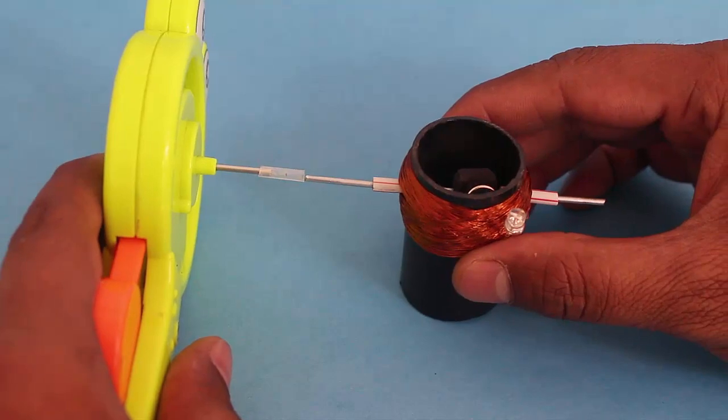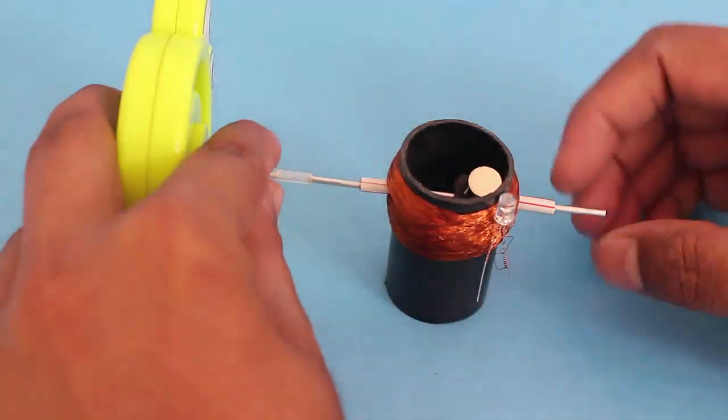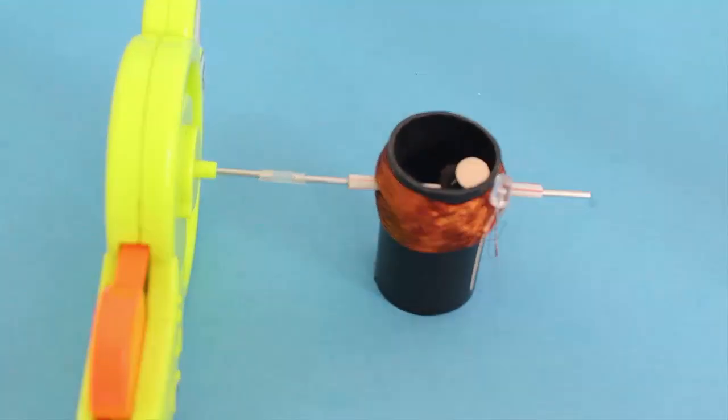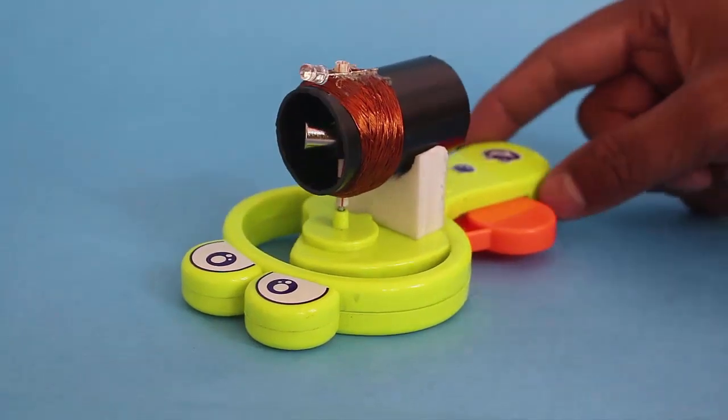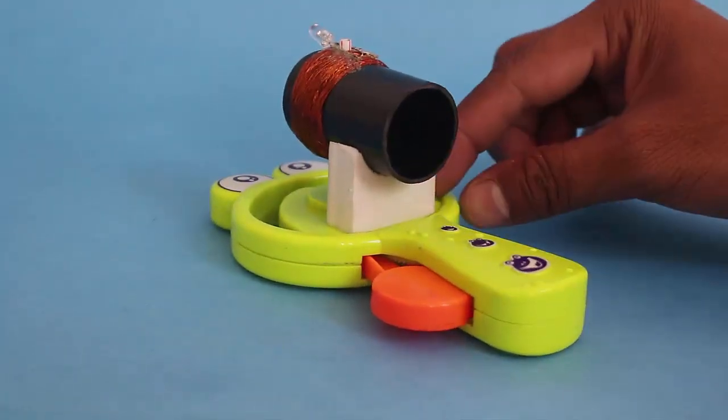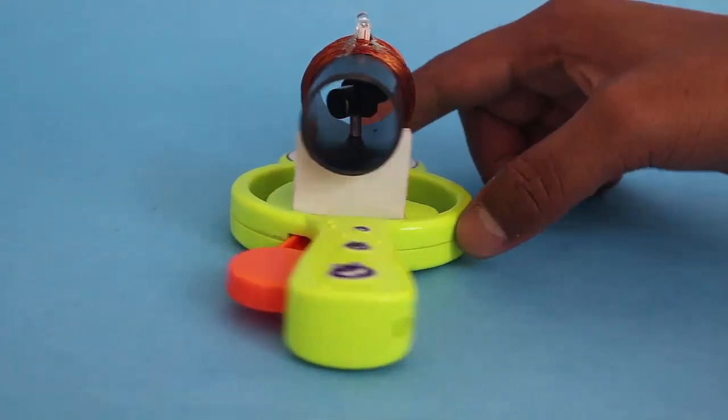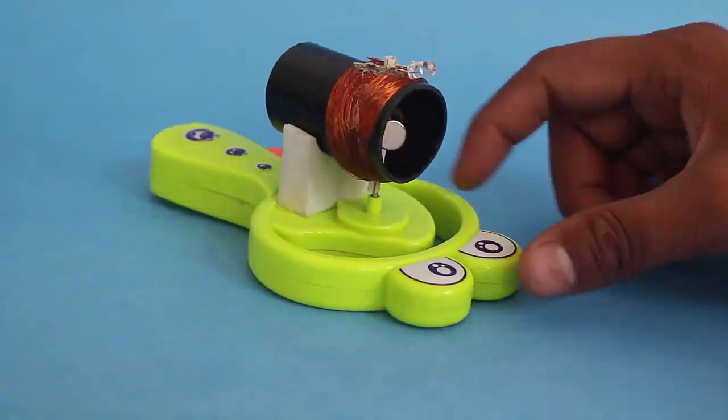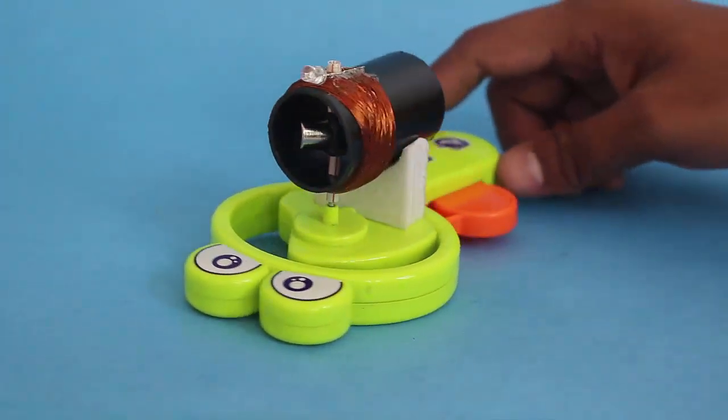Now remove the fan propeller from this unit and instead attach the fan shaft to the generator shaft with the help of a ballpoint refill coupling. Fix the generator on a styrofoam mount. The model is complete.